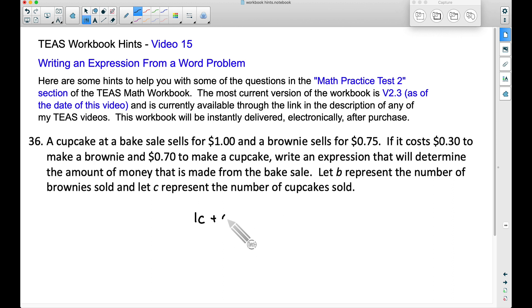But they're also going to make money selling brownies as well. They're going to make 75 cents, so I'm going to do $0.75 times B, which is the number of brownies sold. For example, if they sold two brownies, $0.75 times two would be $1.50.